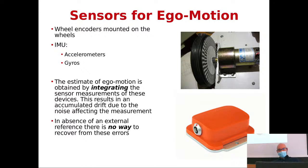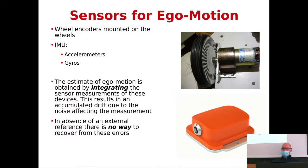For ego motion, at a certain point the error will drift so high that you can't cope with or estimate the position. To avoid ego motion estimates drifting away and to calibrate sensor bias, we observe the world. By observing the scenario, we know a very important thing: we know when we are not moving.